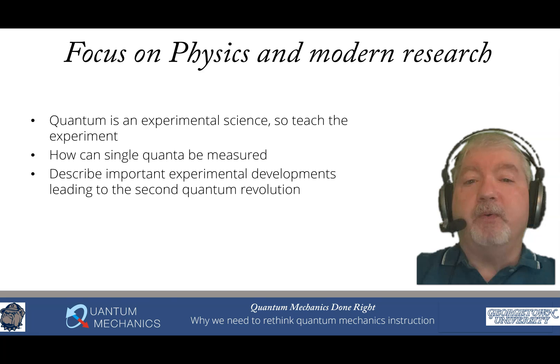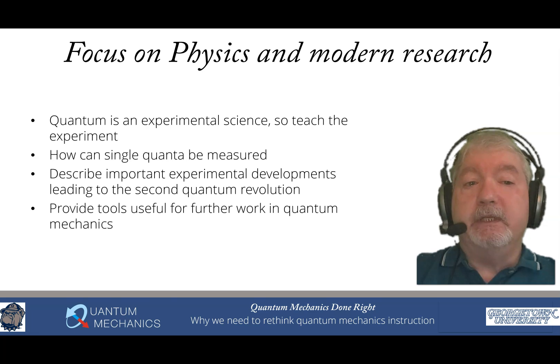Let's describe important experimental developments that led to the quantum, the second quantum revolution. We can now control individual quanta. How do we do that? We should be teaching that. Let's provide tools that are useful when you go beyond your quantum mechanics class and you want to work in quantum field theory, or many body physics, or you want to be able to read the literature on that. Let's provide you with tools that allow you to do that in the instruction that you're actually taking.